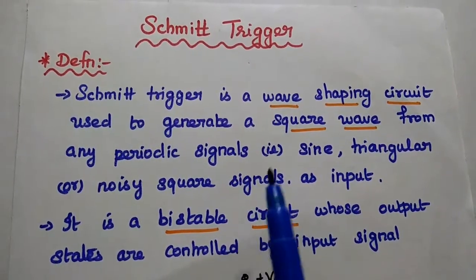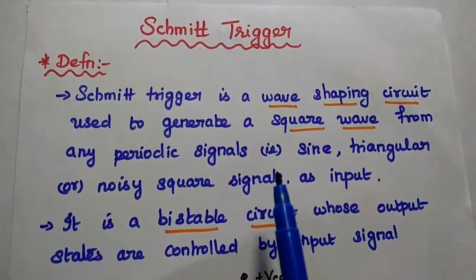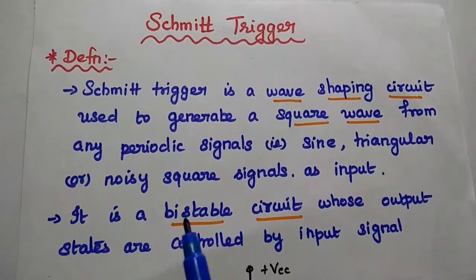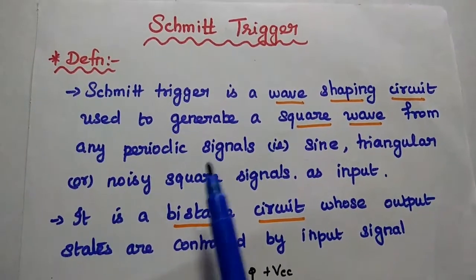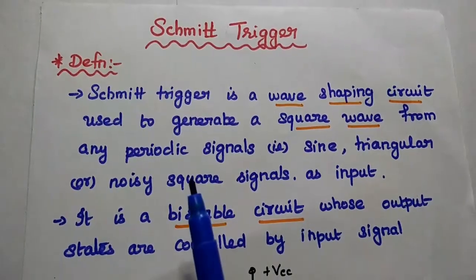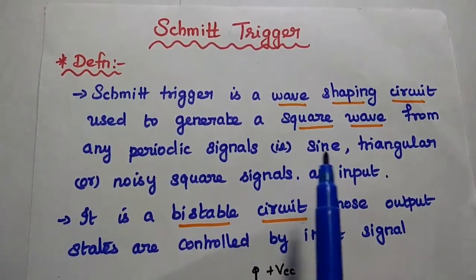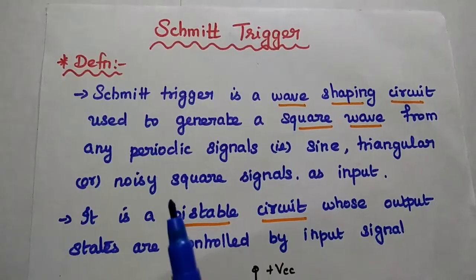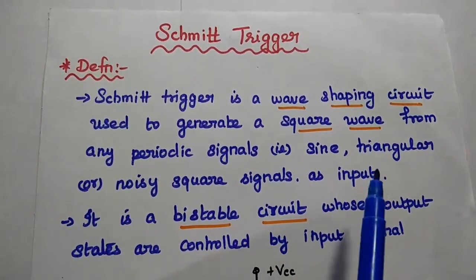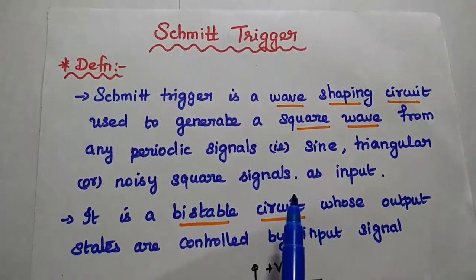Now we are going to discuss the Schmitt Trigger and its operation in detail. Let's start with the definition. The Schmitt Trigger is a wave shaping circuit which is mainly used to generate a square waveform from any periodic signals like sine wave, triangular wave, or noisy square signal as input.